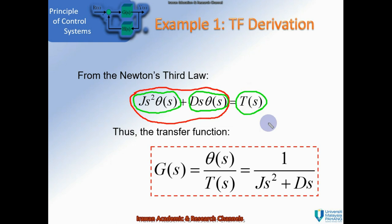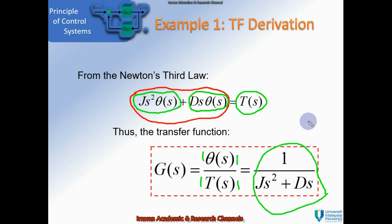With reference to Newton's third law, we arrange the equations. The impedance of the torque includes the torque from inertia and the torque from the damper, set equal to the applied torque. We then rearrange to get the transfer function. The applied torque T is the input of the system, and the angular displacement theta is the output. This gives us the final transfer function for this example.